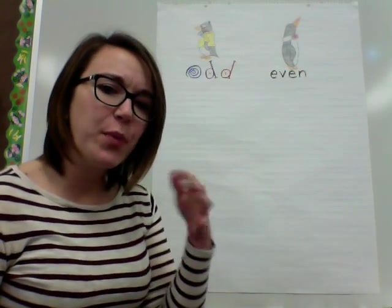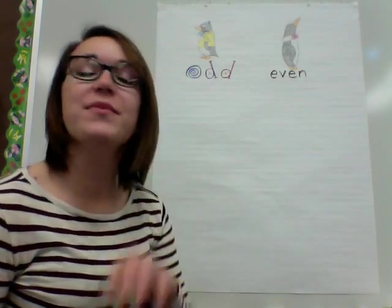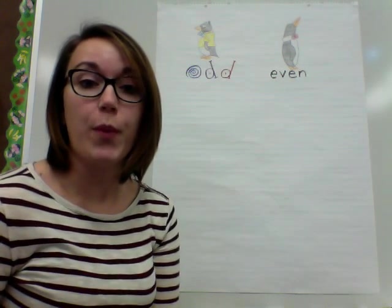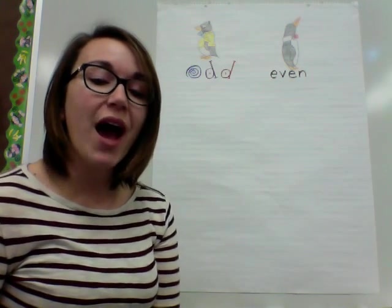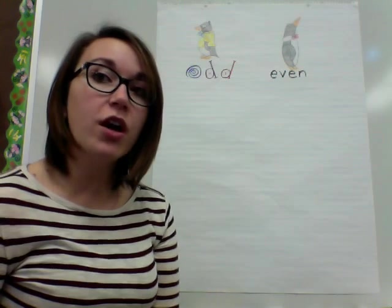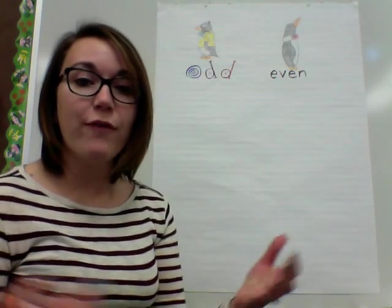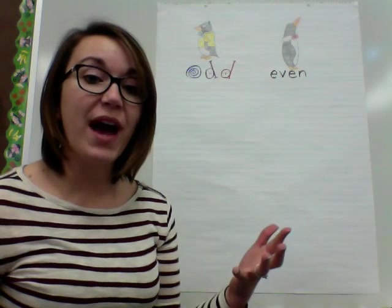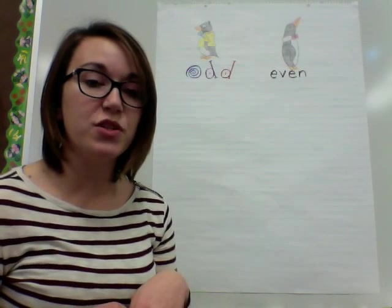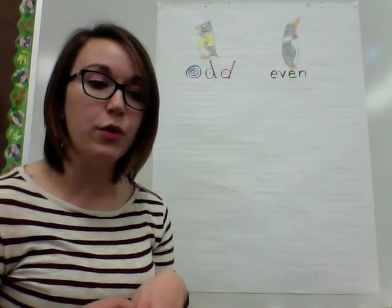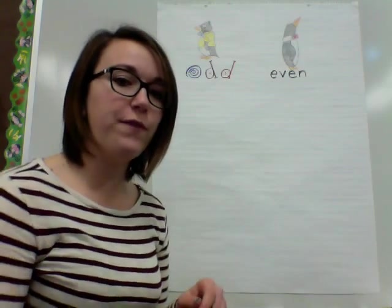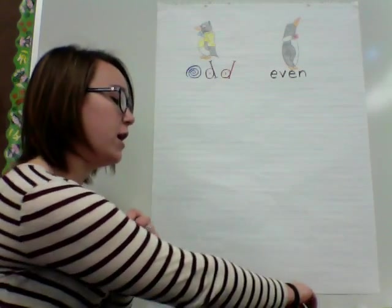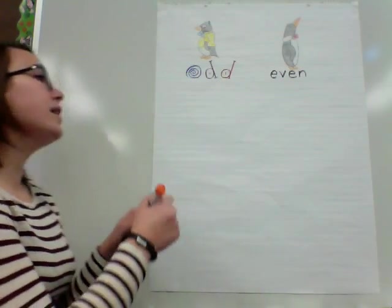Tacky was a little bit of an odd bird, and a lot of times Tacky was left out of activities that his companions took part in. When we have an odd number, it's hard to share evenly with everyone involved. For example, if I had a group of five students and I asked you to pair up into groups of two, it would be difficult for the five kids to do that without having someone left over.